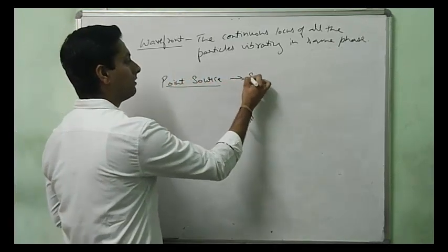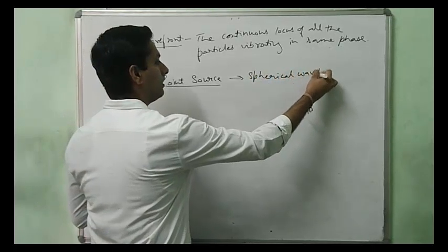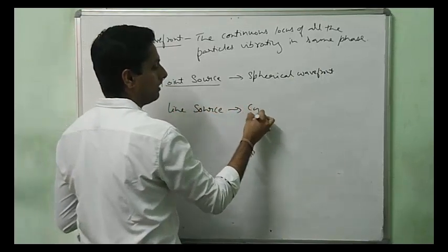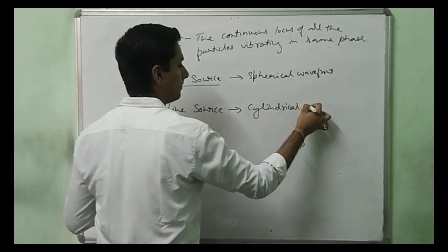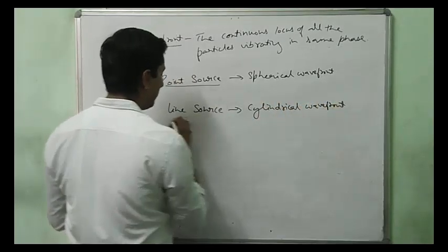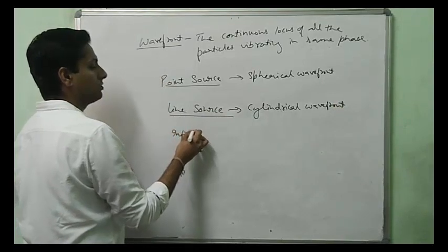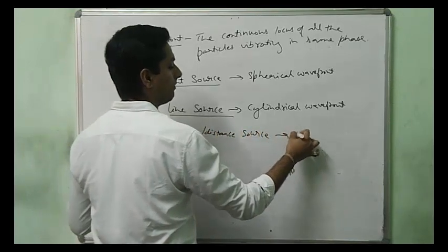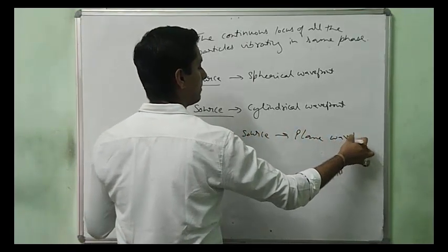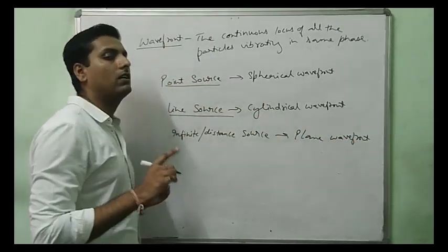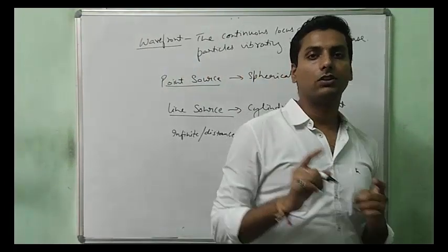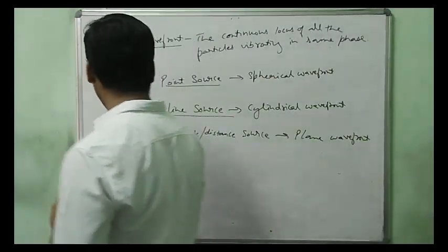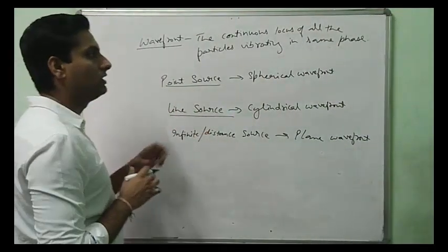For a point source, the wavefront will be a spherical wavefront. For a line source, the wavefront will be a cylindrical wavefront. For an infinite or distant source — like the sun — you have a plane wavefront. How these wavefronts are formed and how their shapes are determined is given by Huygens' principle.